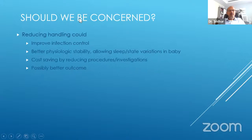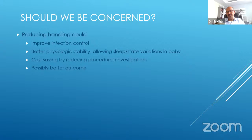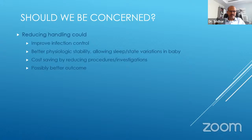Should we be concerned about increased intervention? Reducing handling could improve infection control, better physiologic stability, and allow sleep and state variations — which itself improves the baby's immune response. It may improve growth. Constant stress increases inherent steroid levels, causing blood sugar fluctuations. More frequent sugar monitoring may in turn cause further stress and increase blood sugar. Hyperglycemia can occur in these babies. In early stages, intraventricular hemorrhage risk is also present due to excess handling. Cost savings and better outcomes result — almost definitely better outcomes.